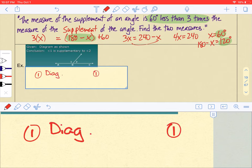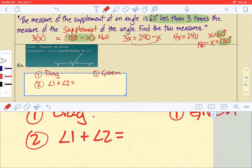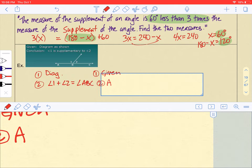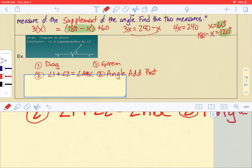We'll abbreviate it as 'Diag.' and that's given. These are going to be short proofs. Number two: what do we assume from the diagram? What can we see? Angle one plus angle two is equal to angle ABC, and this is the angle addition postulate. You can add up two angles and